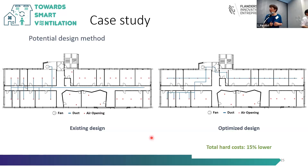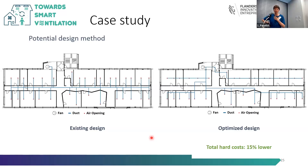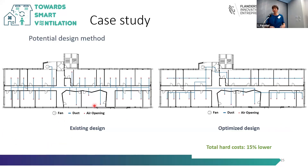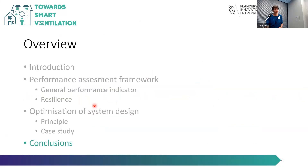On the left you can see the existing design — a traditional one — and on the right you see an optimized design. You can see it's not one duct in the corridor, but a different layout. The optimized design has hard costs that are 15 percent lower than the existing design, based on our method.